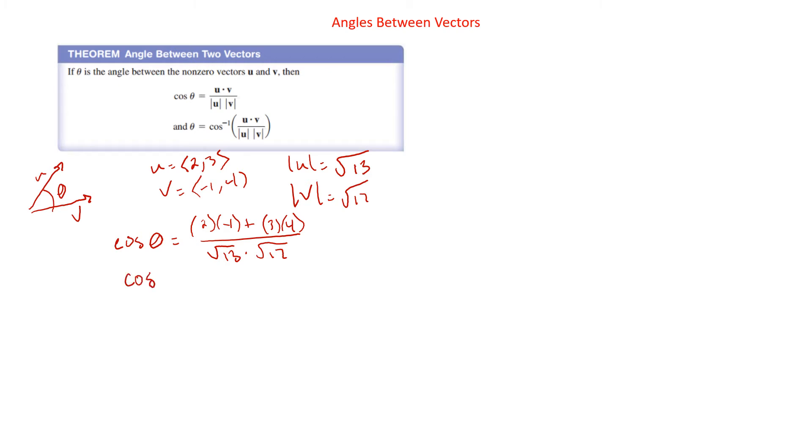So that's going to be 2 times negative 1 plus 3 times 4 over root 13 times root 17. We figured out that that upper value was 10. So we have 10 over root 13 root 17. That's just a number. So we can find that. I'm going to go with root 13 times root 17, making sure that we don't have that root 17 inside of the root 13. Then 10 divided by that number. That was like 14.86. So we get about 0.6726. So cosine of that was about 0.6726. Then we go inverse cosine and get the angle between these is 47.726 degrees.